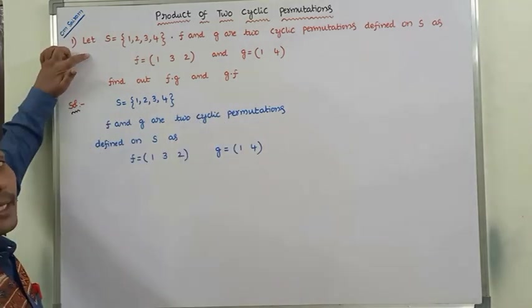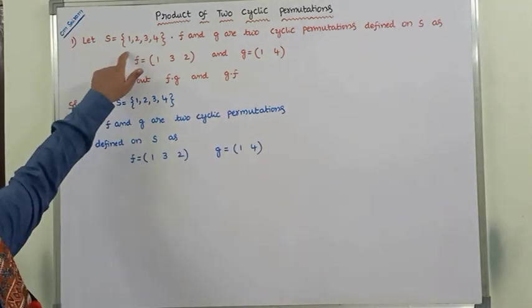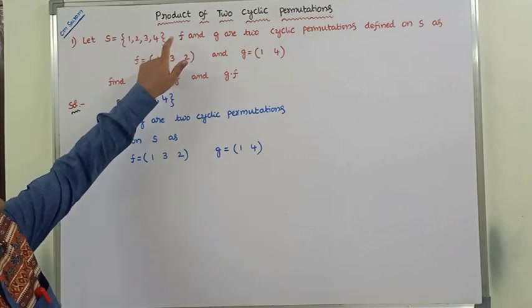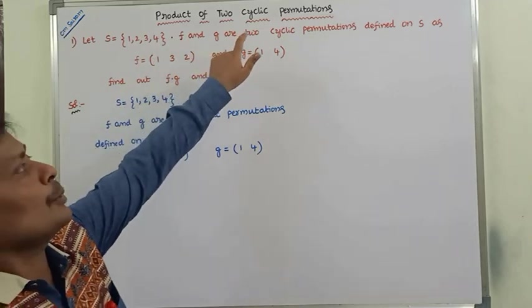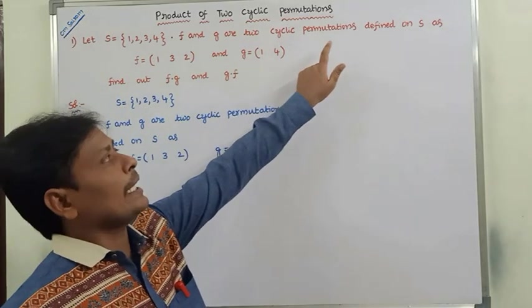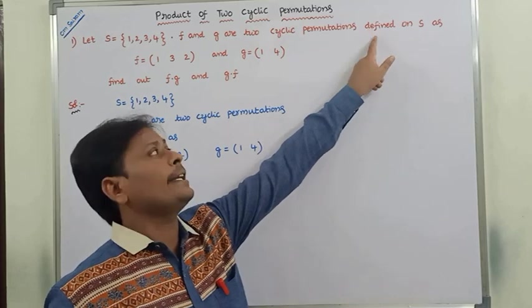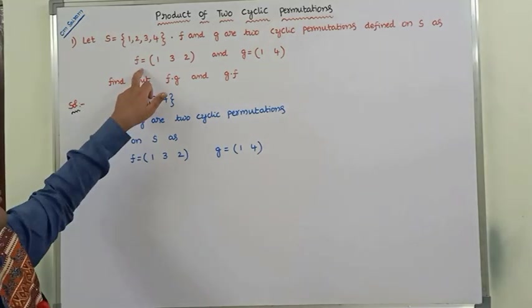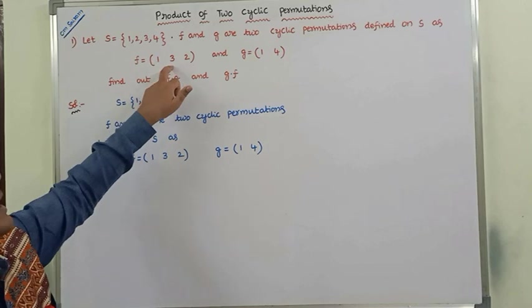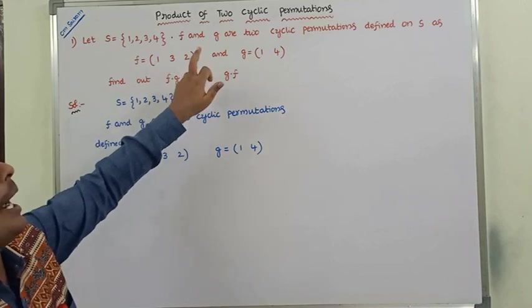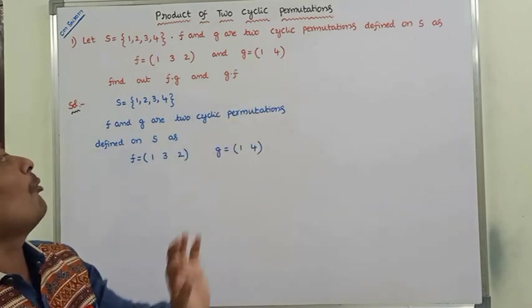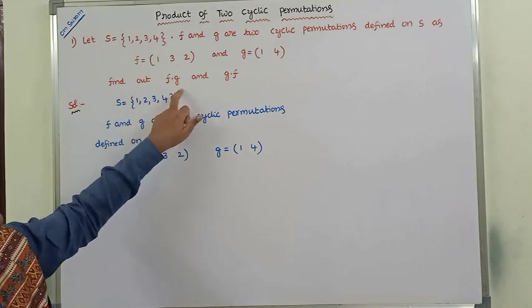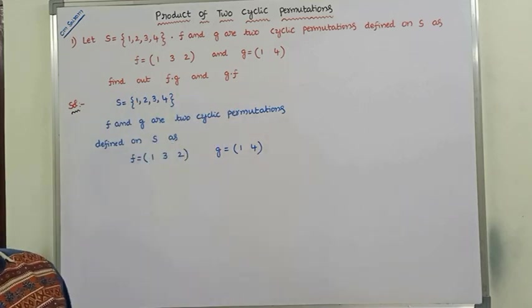Let S be the set {1, 2, 3, 4}. F and G are two cyclic permutations defined on set S as F = (1, 3, 2) and G = (1, 4). Find F∘G and G∘F.